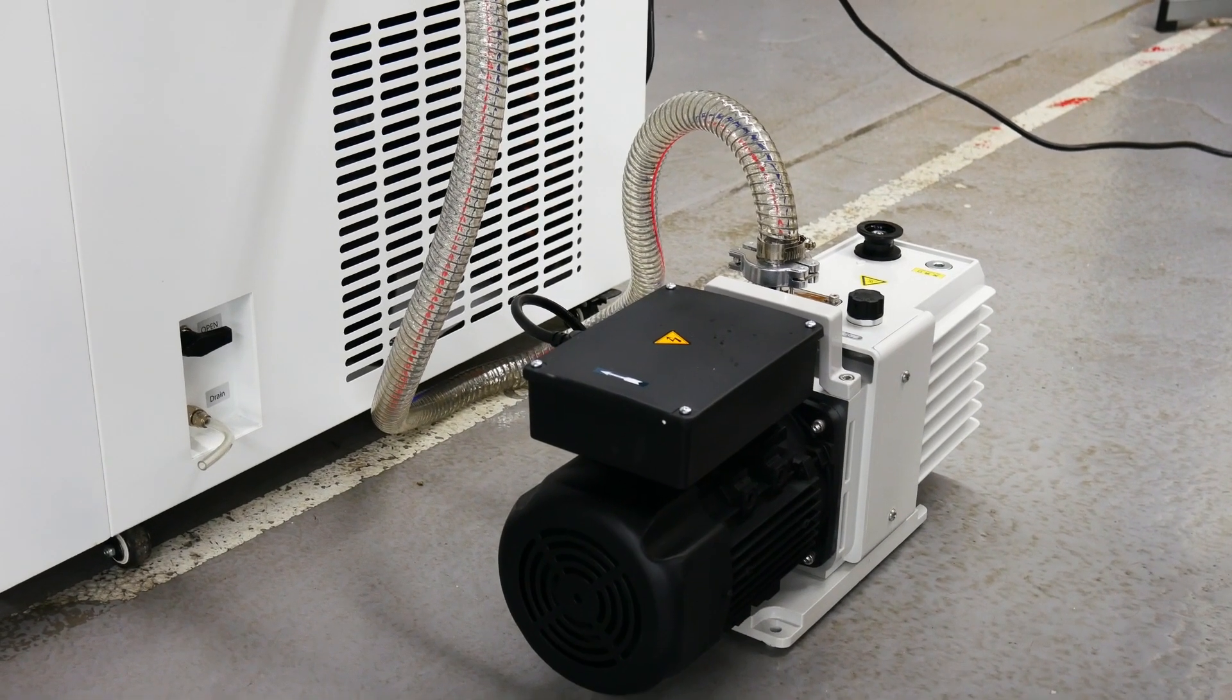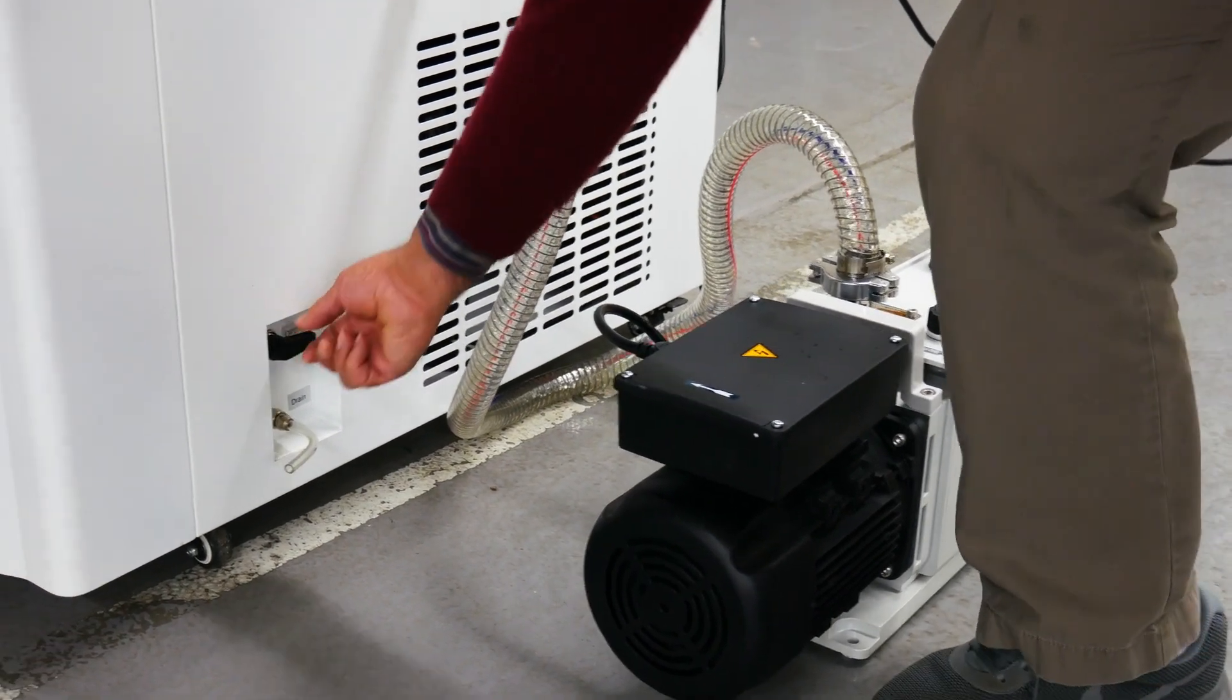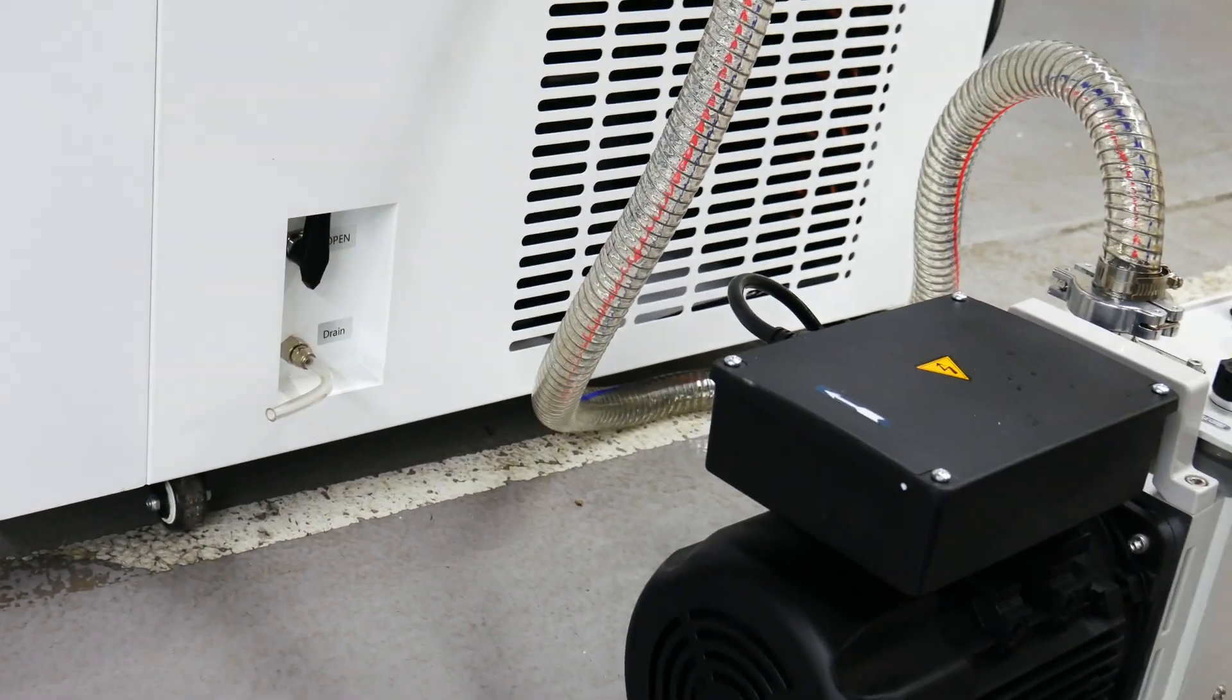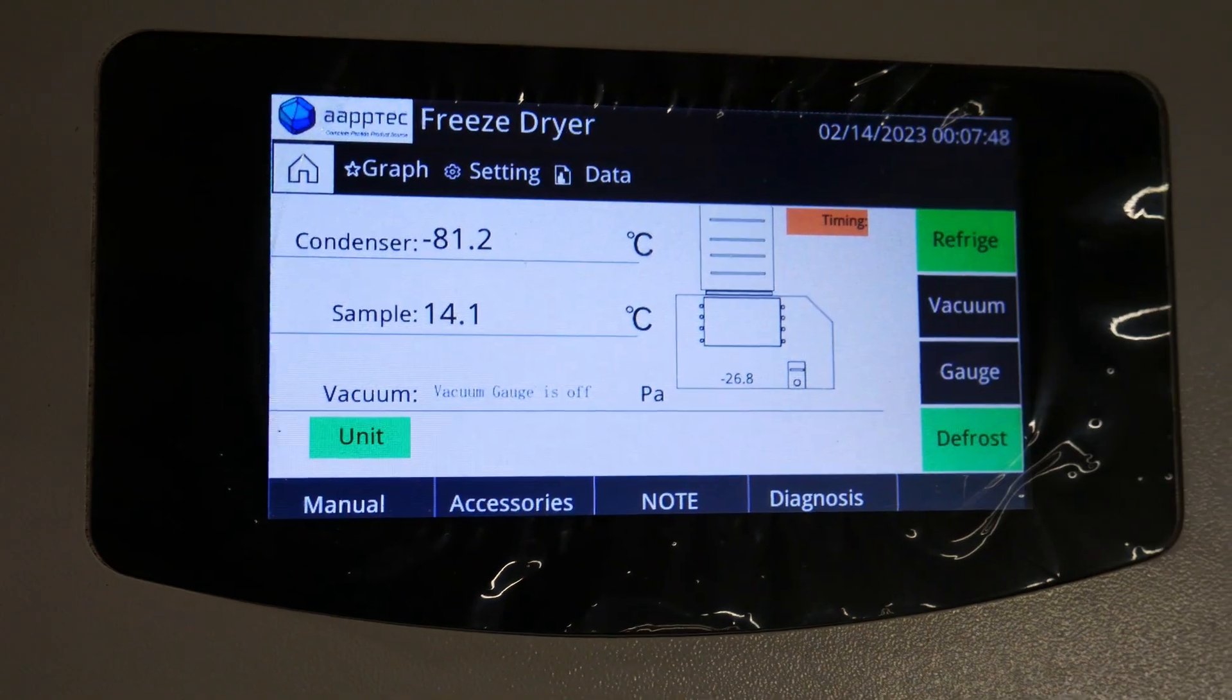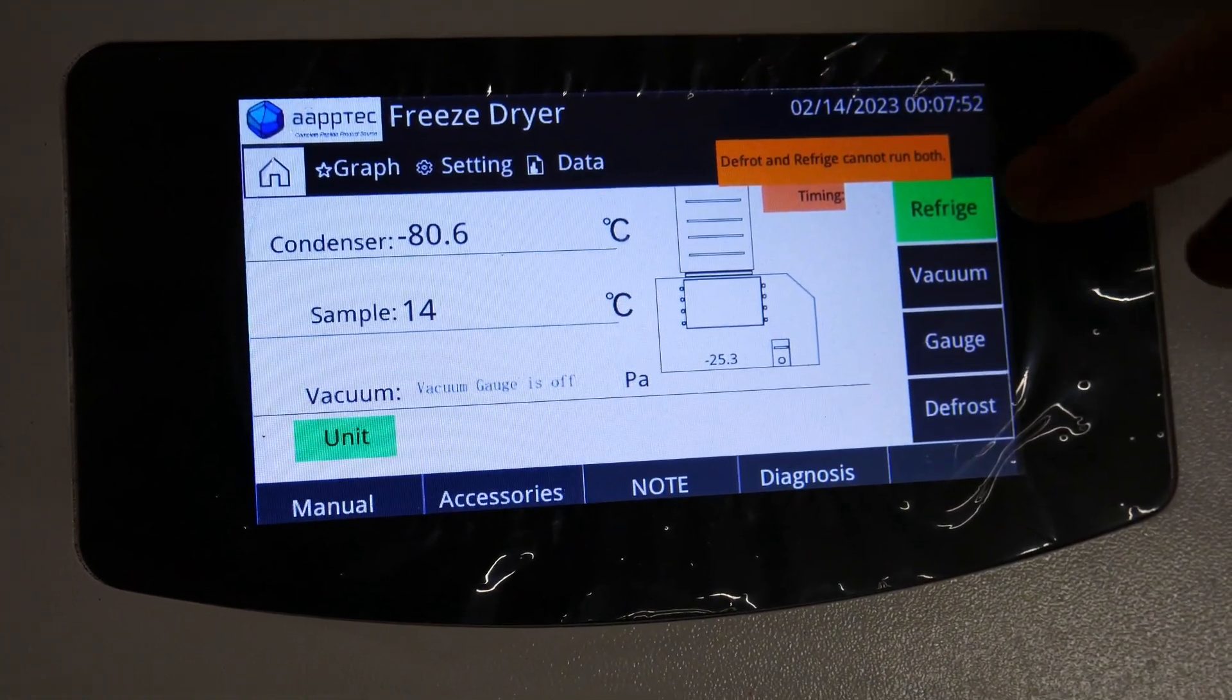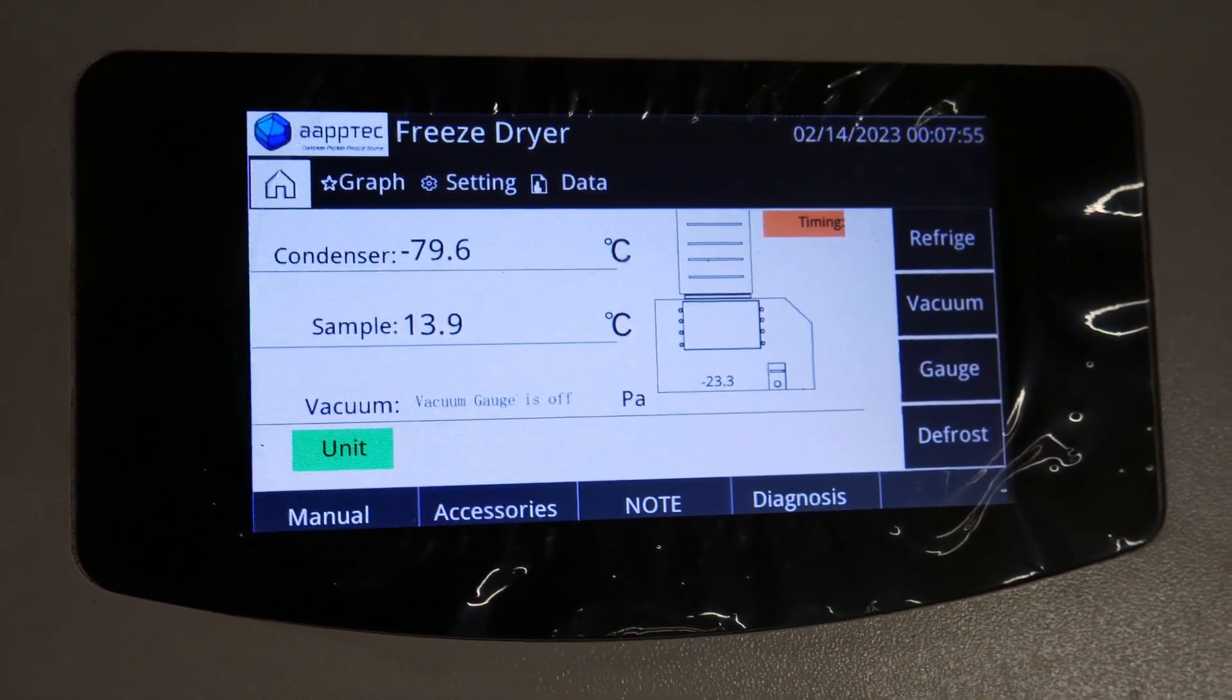To shut down the system, first, you turn off the vacuum in the system by opening the air. The pump starts increasing because of the air going in. Now, you press here to shut down the vacuum. You turn off the vacuum, the gauges, and the defrost. If you want the defrost on, simply leave it on. Then, you turn refrigeration off, and this automatically turns off the whole system.